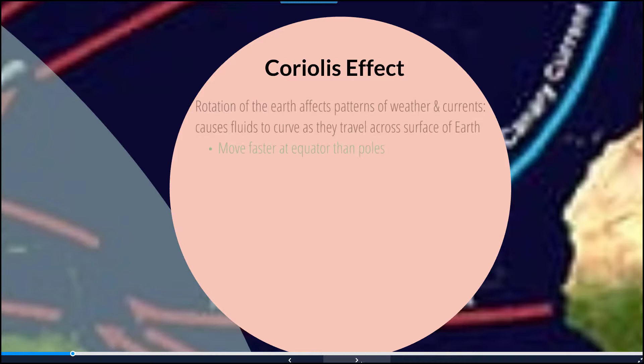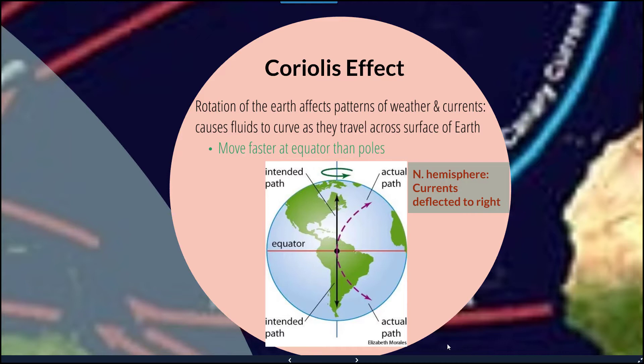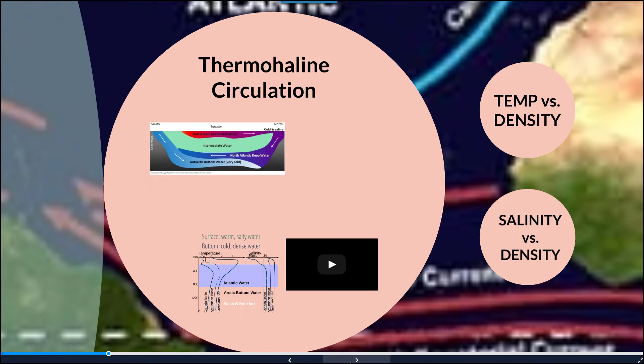There's something called the Coriolis effect that is responsible for driving a lot of this. The Coriolis effect involves the rotation of the earth wherein patterns of weather and currents cause fluids to curve as they travel the surface of the earth. This movement occurs faster at the equator than at the poles. In the northern hemisphere, currents are deflected to the right, whereas in the southern hemisphere currents are deflected to the left. Because of this continual movement around our axis, we have this shifting in the path of those currents.